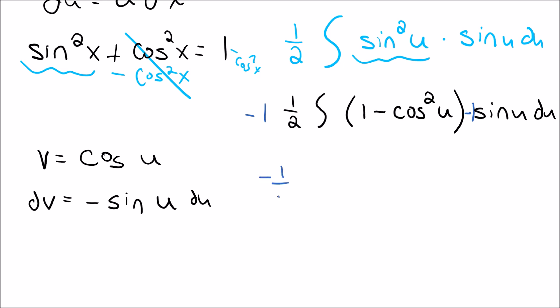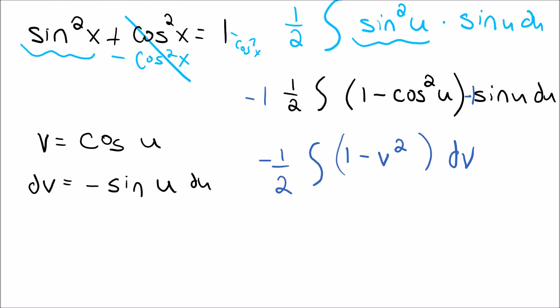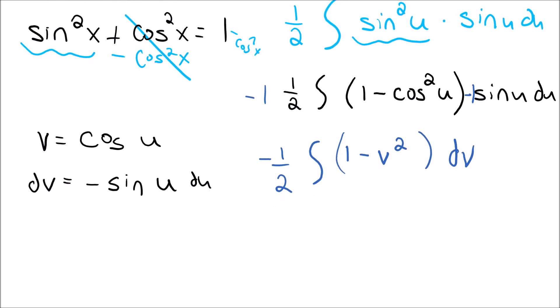So then this becomes negative 1 half times the integral of 1 minus v squared, and then negative sine u du just becomes dv. This should be v squared. 1 minus v squared dv. Perfect. Now I have something that I can finally just integrate very nicely here.